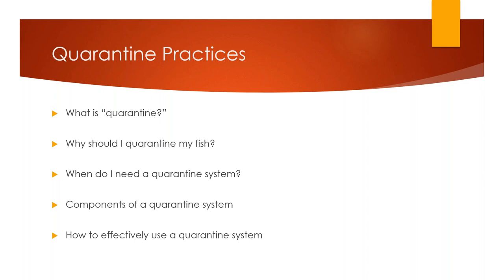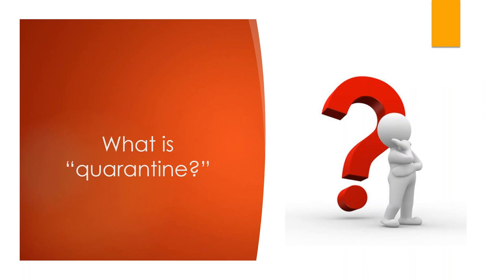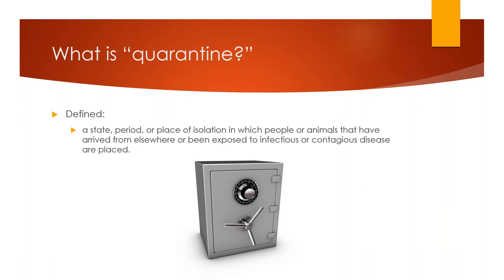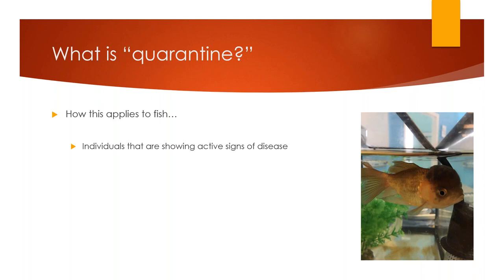Starting off with a basic definition of what quarantine is: quarantine is a state, period, or place of isolation in which people or animals that have arrived from elsewhere or have been exposed to infectious or contagious disease are placed. Quarantine applies to fish that are actively showing signs of disease, individuals that have known exposure to a disease, and individuals with an unknown history of disease exposure.